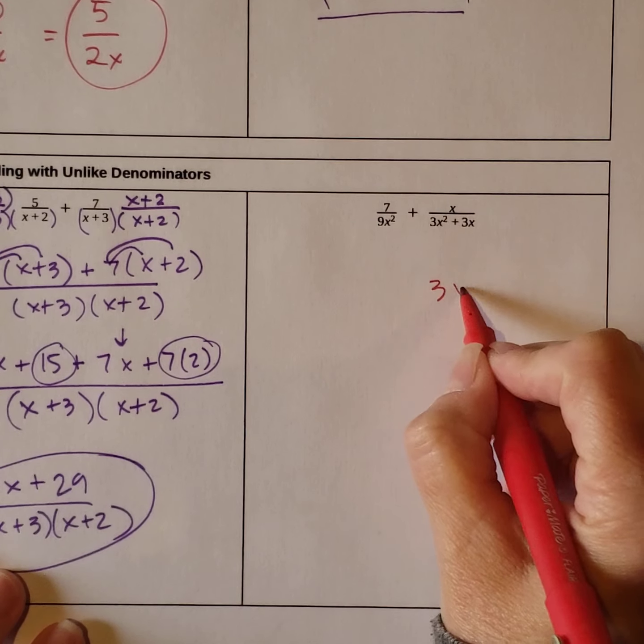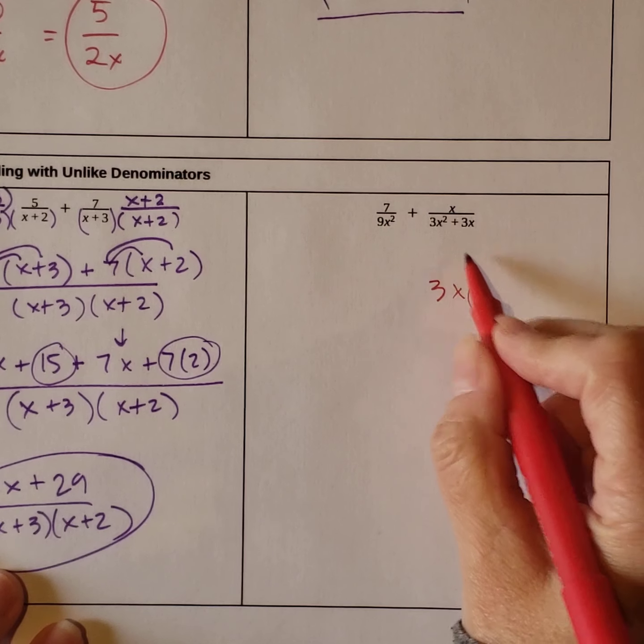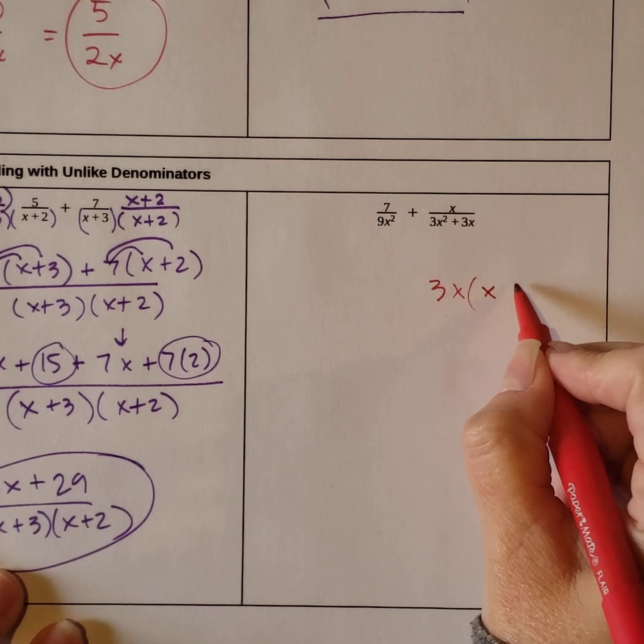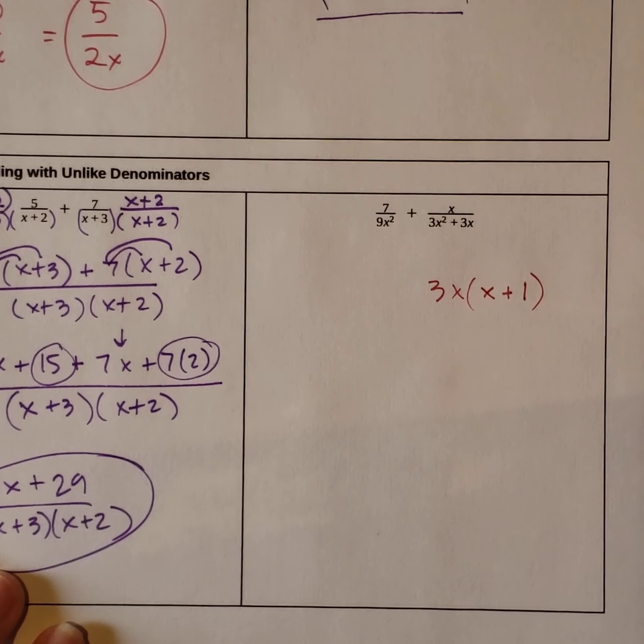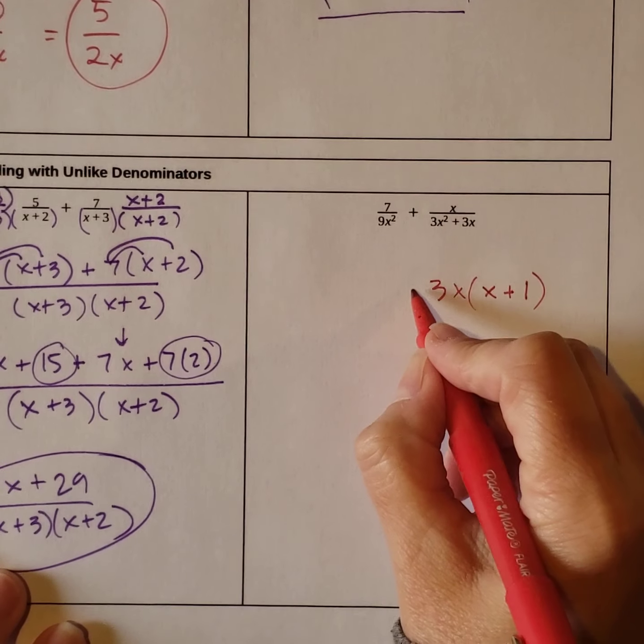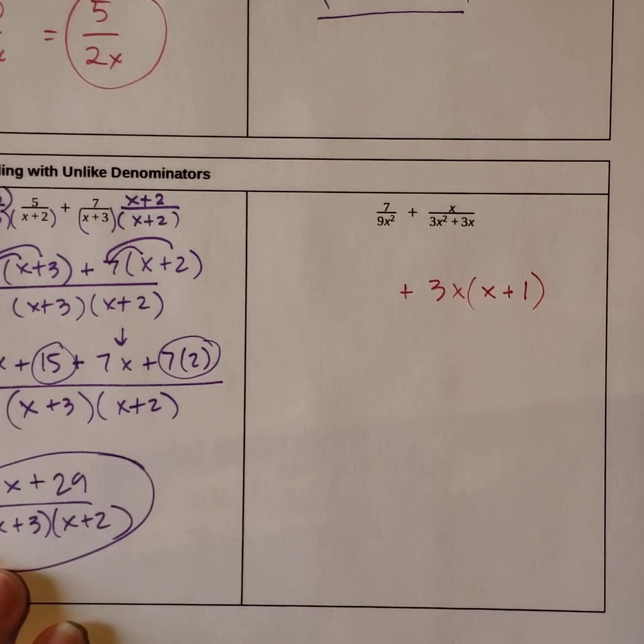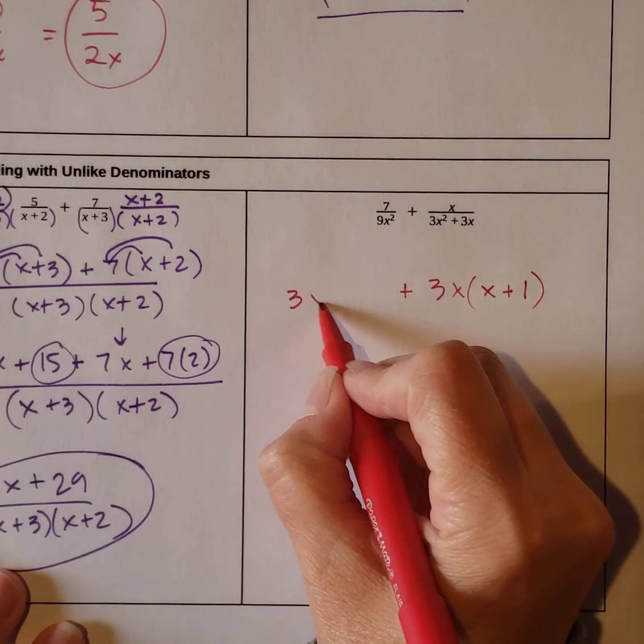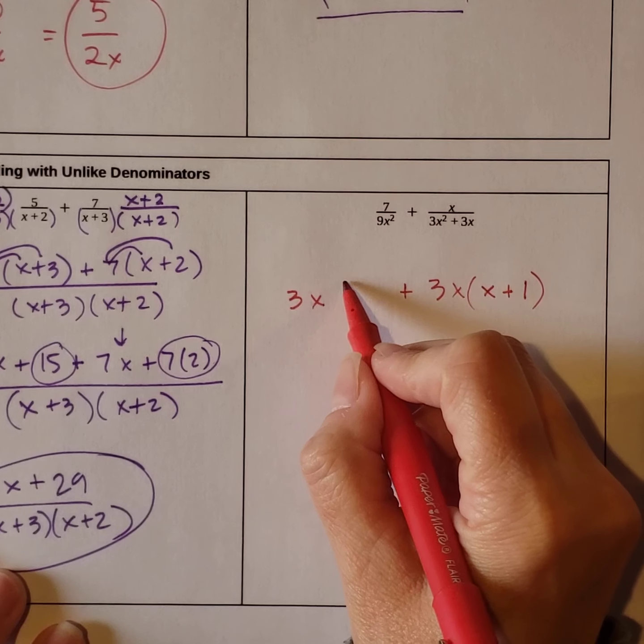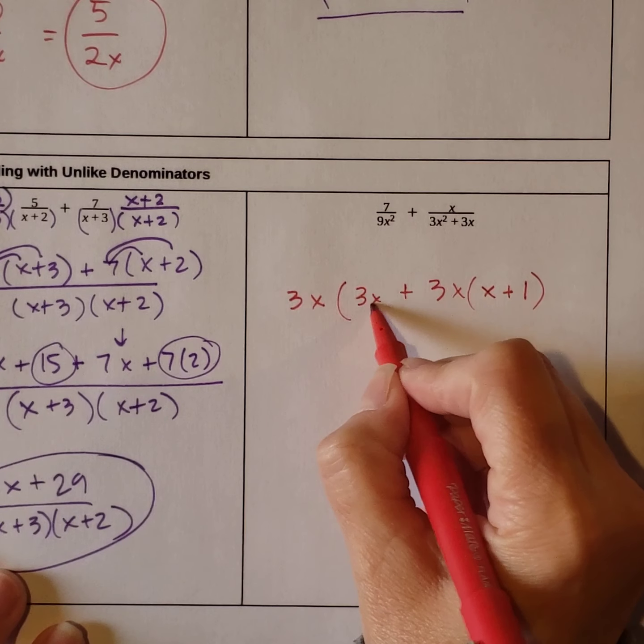So we have 3x that we can factor out, and then we have x plus 1. Now let's see what we have on the left side. Can we factor 3x out of this? We can, and then what's left is 3x.